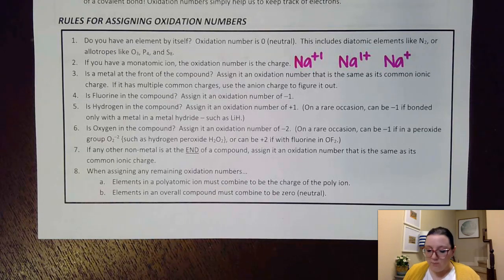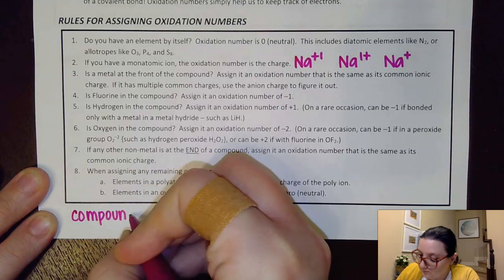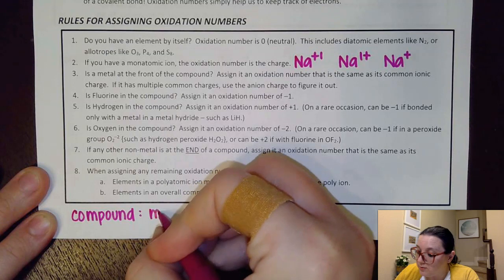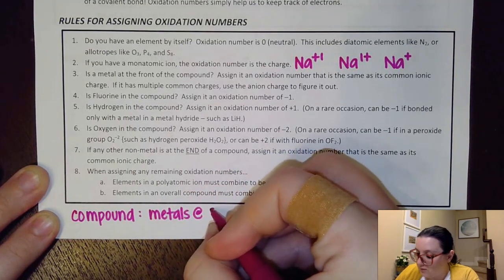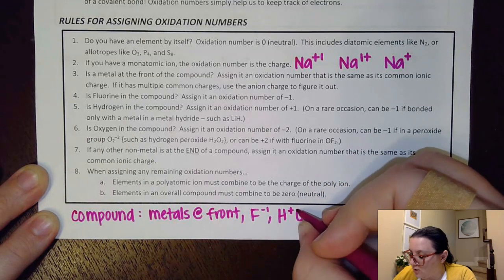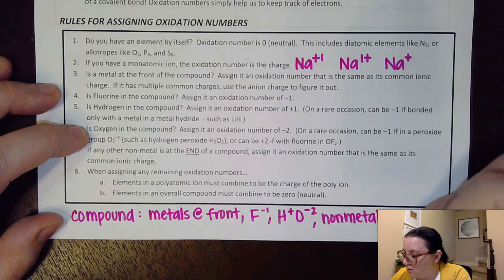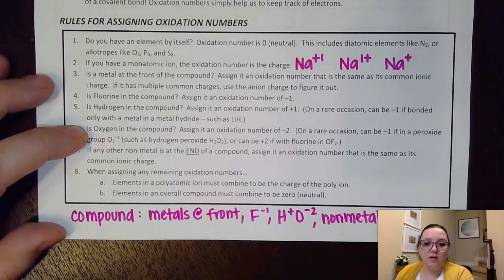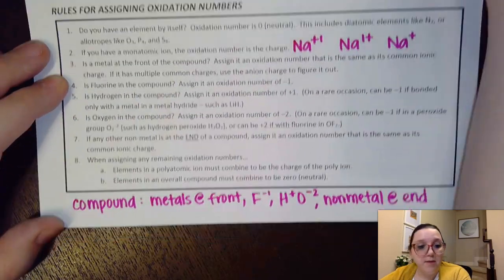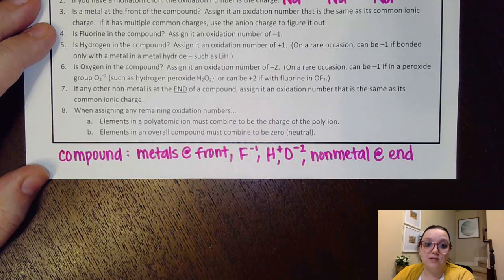Here's a quick way to remember the order of assignment in a compound: metals at the front, then fluorine negative one, then hydrogen positive one, then oxygen negative two, then nonmetal at the end. Then go back and assign anything else remaining. That is the order you want to work in. Let's go through some examples to see how this works.